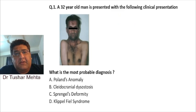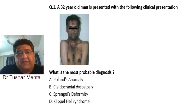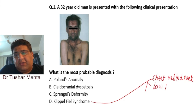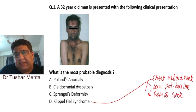A 32-year-old man with the following clinical presentation — what do you think we are dealing with? Klippel-Feil syndrome is something which has a triad: a short webbed neck, a low posterior hairline, and decreased range of movement at the neck.